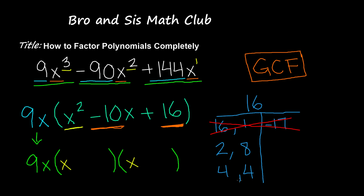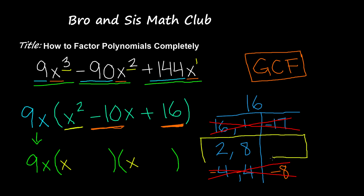For 4 and 4: positive 4 plus negative 4 cancels to zero; negative 4 plus positive 4 also cancels; negative 4 plus negative 4 gives negative 8 — so we can't use that pair either. But for 2 and 8: negative 2 plus positive 8 gives positive 6; positive 2 plus negative 8 gives negative 6; negative 2 plus negative 8 gives negative 10. So we use the factor pair negative 2 and negative 8.